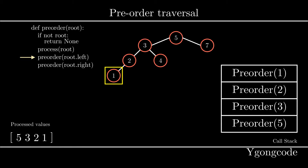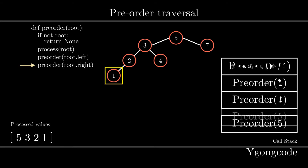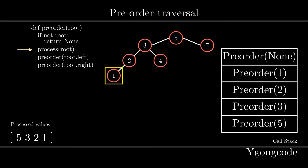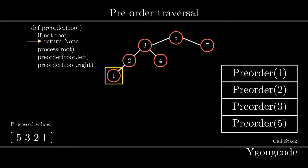Since we previously exited out of the recursive call to the left subtree in pre-order 1, we can now proceed to the next line, which recursively calls its right subtree, which is another pre-order of none. We push this into our call stack. Now we enter pre-order of none, which will hit our base case and return. So we pop this off our call stack and go back to pre-order 1. Once we go back to pre-order 1, we see that we just exited out of the right subtree. What code do we execute next? Nothing — we're done with pre-order 1.